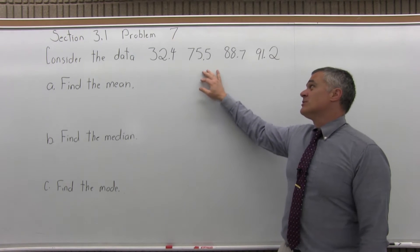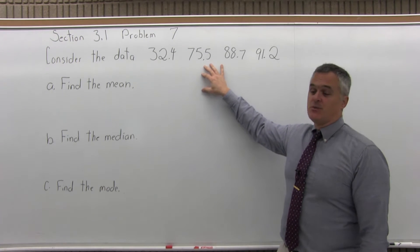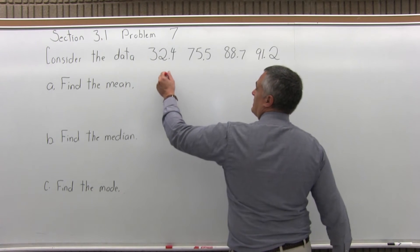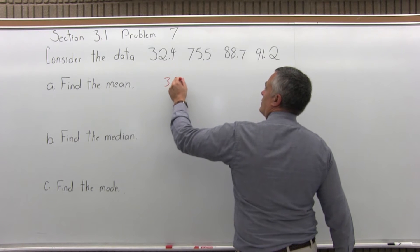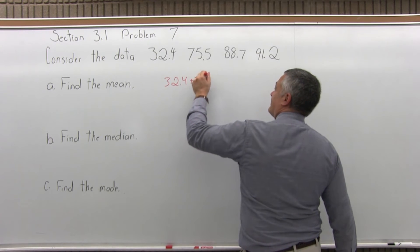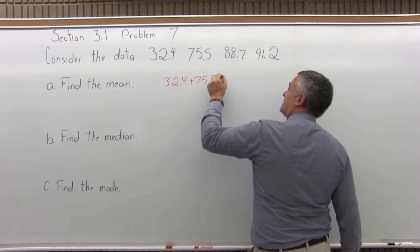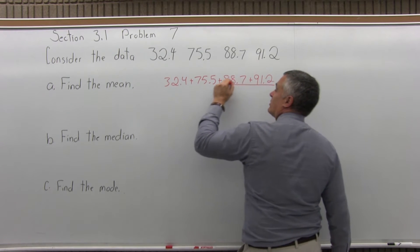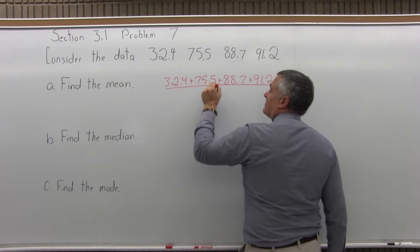What makes this a little different than some previous problems are the decimals, but it's the same process. It's a little bit more tedious, maybe. So for the mean, you'll add 32.4 plus 75.5 plus 88.7 plus 91.2. You're going to total all the data and divide it by...